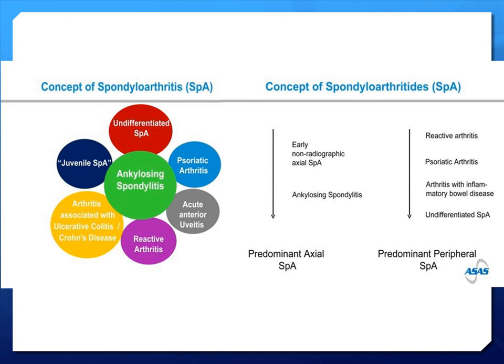Here's the concept of spondyloarthritis. It's divided into predominantly axial involvement versus peripheral involvement. Patients with ankylosing spondylitis have predominantly axial involvement. As for patients with reactive arthritis, psoriatic arthritis, arthritis related to inflammatory bowel disease, or undifferentiated spondyloarthritis, they are more likely to have peripheral involvement.